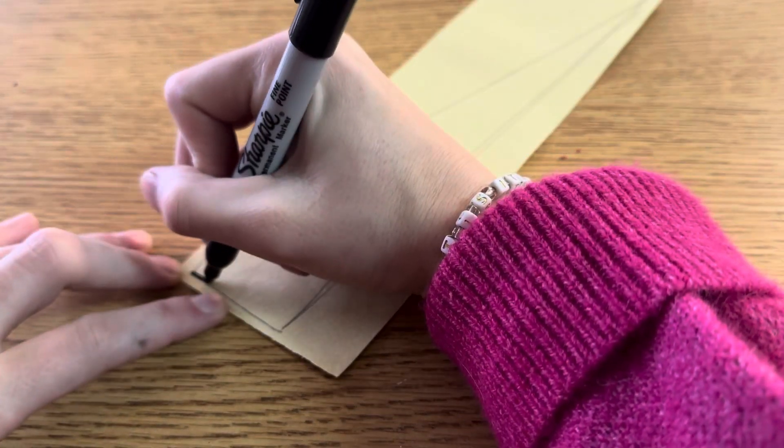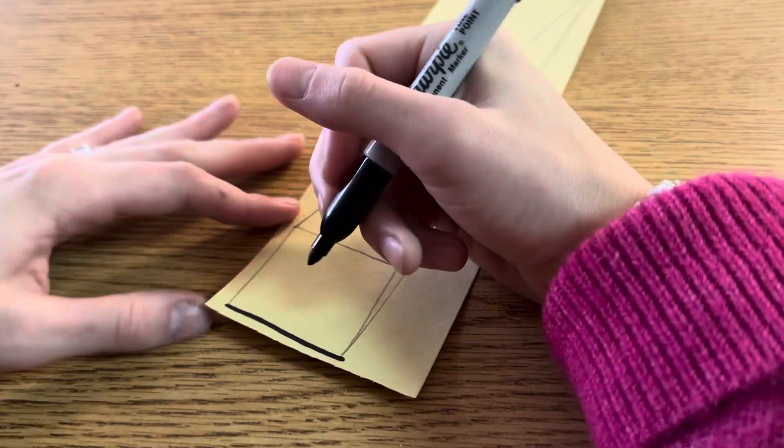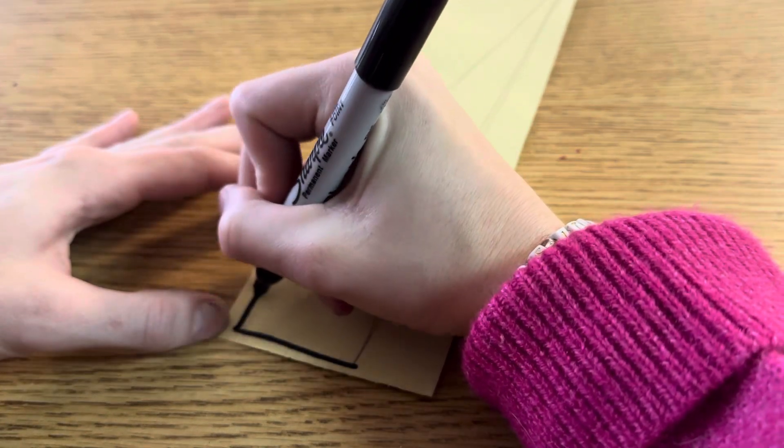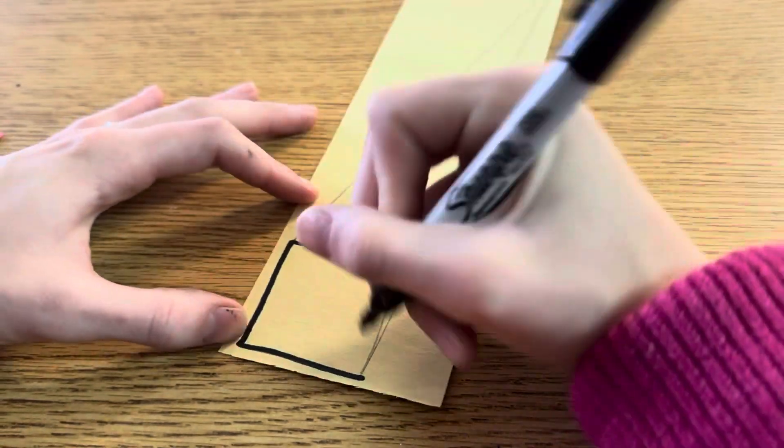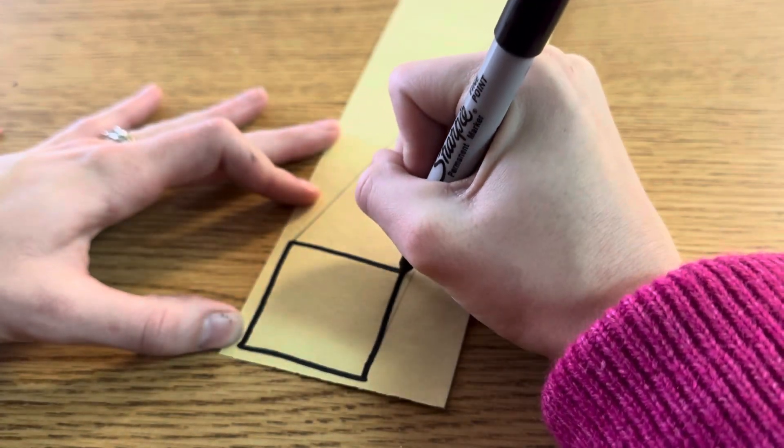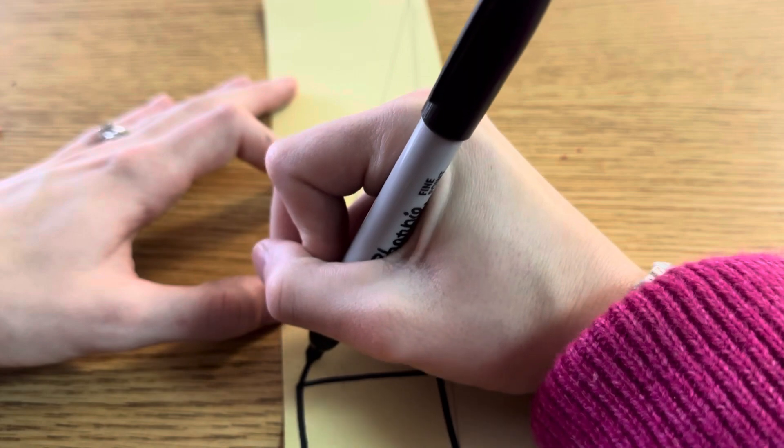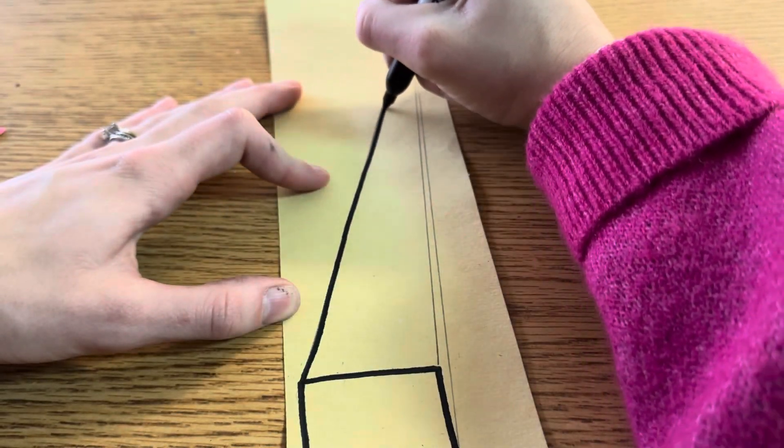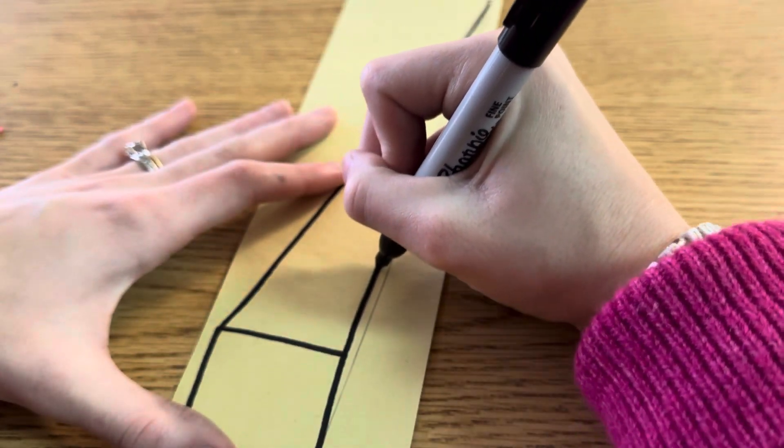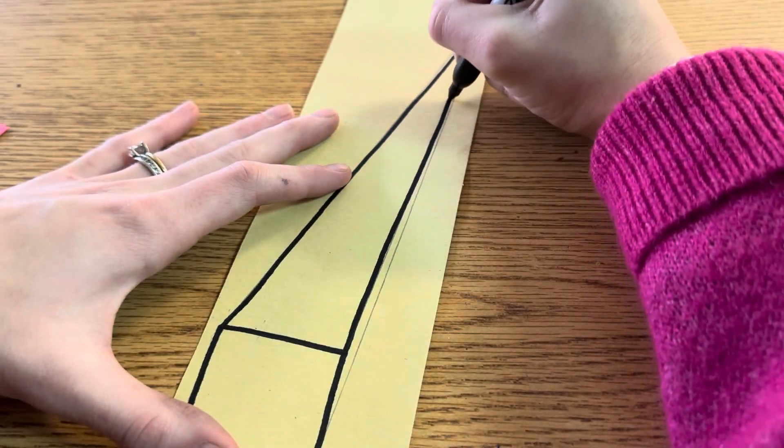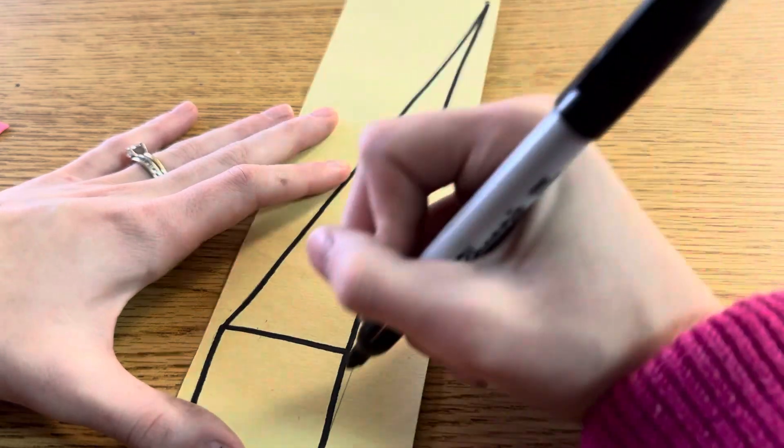First thing we're going to do today is you're going to get a Sharpie and we are going to outline or go over all of your pencil marks that you drew last week. Whenever we do this, be sure you're taking your time and trying to keep your lines as straight as possible. If you need to use your ruler to try to keep your lines straight, you could do that.